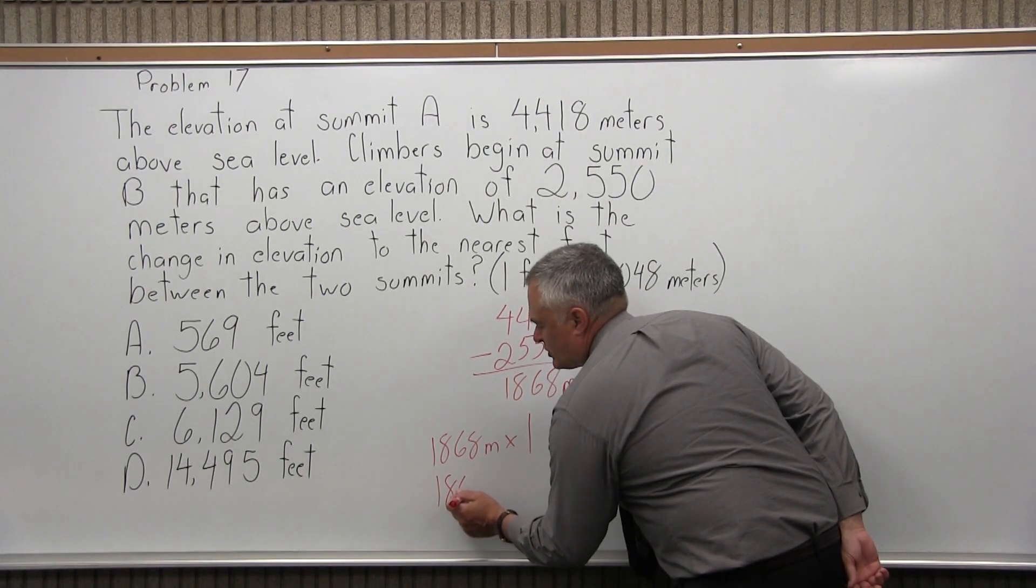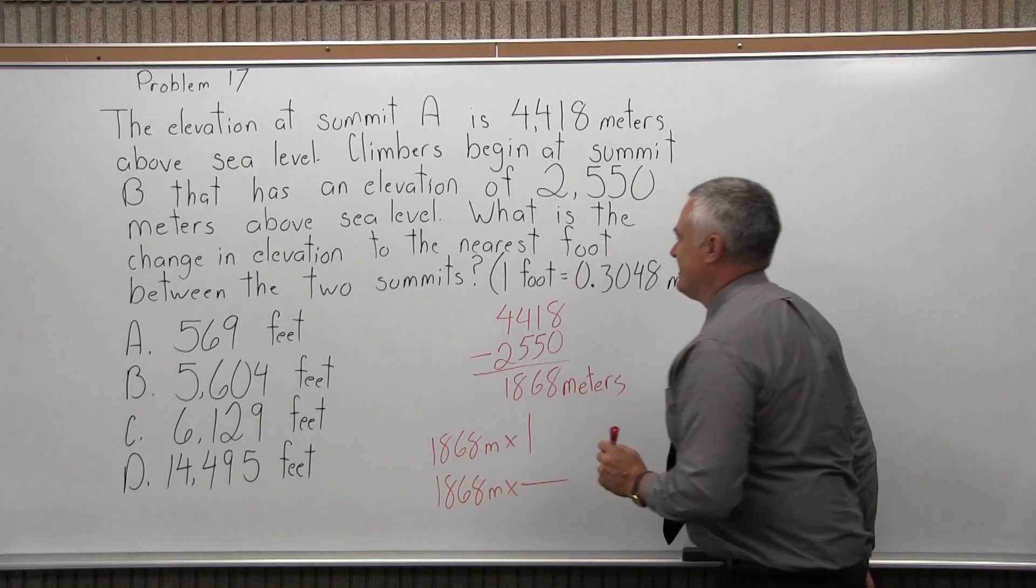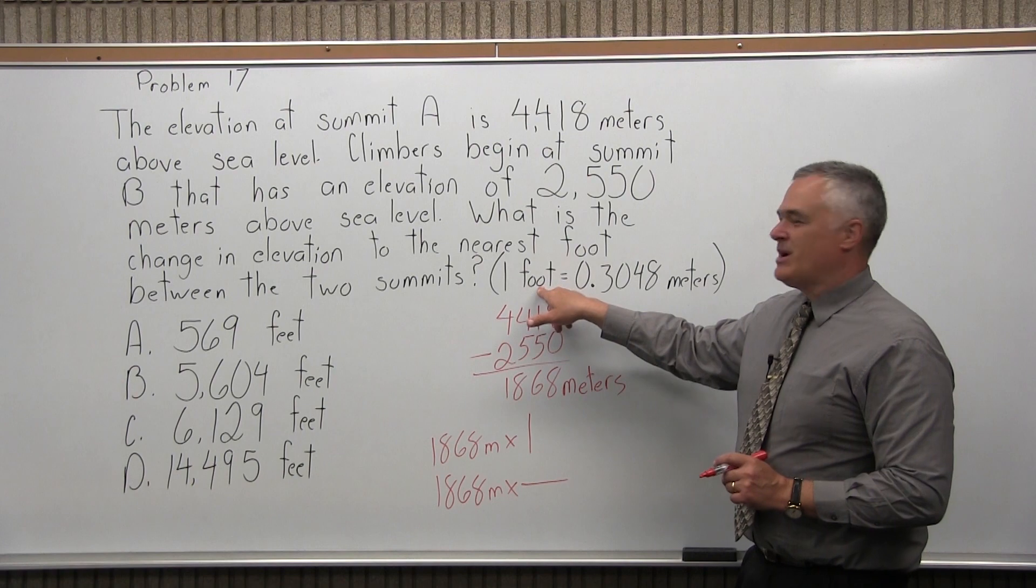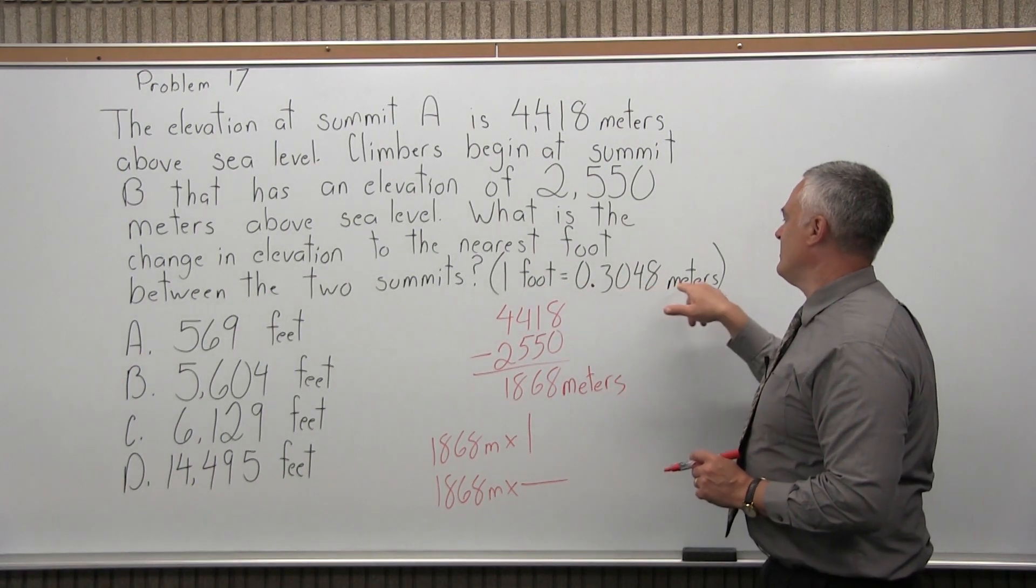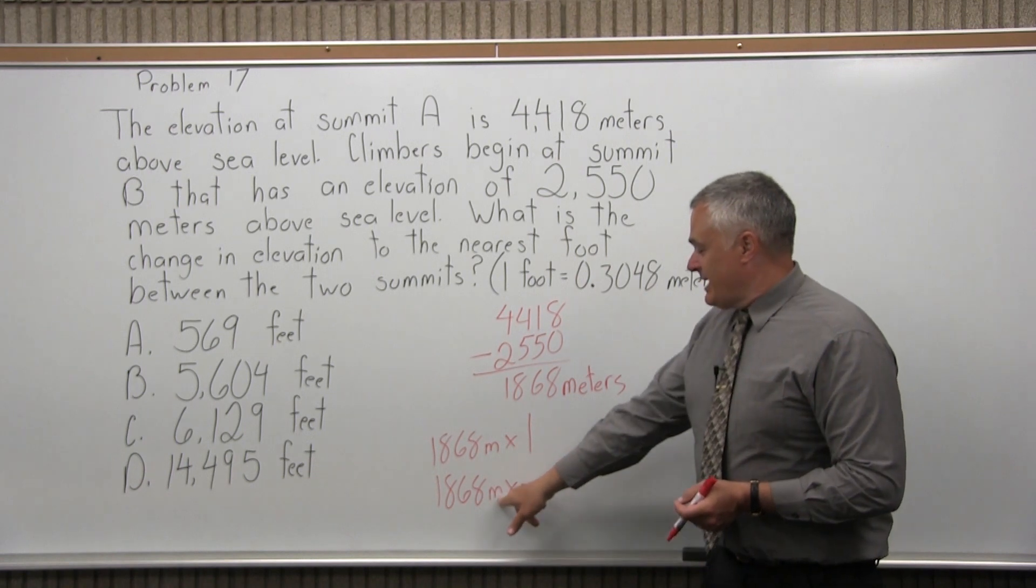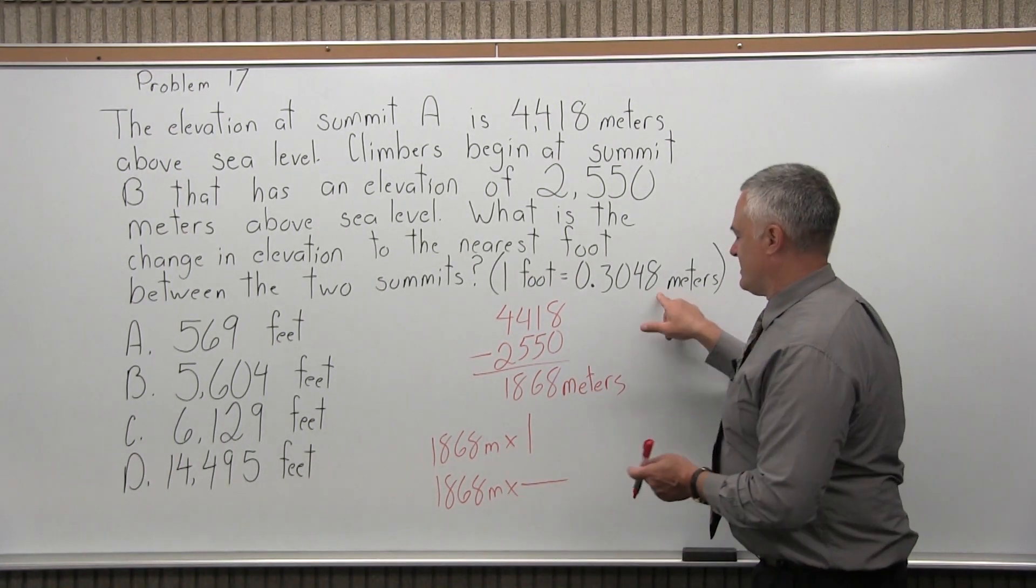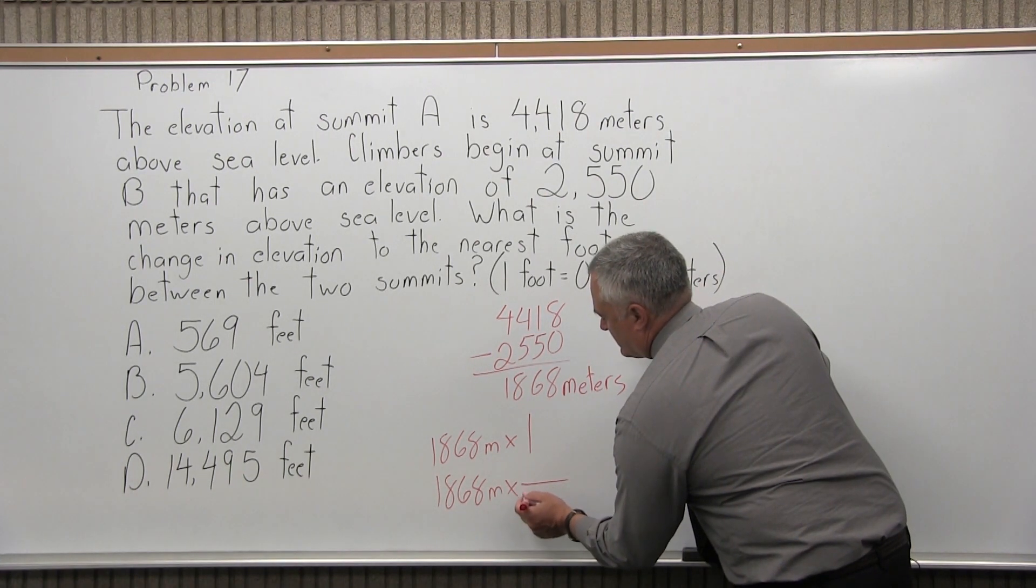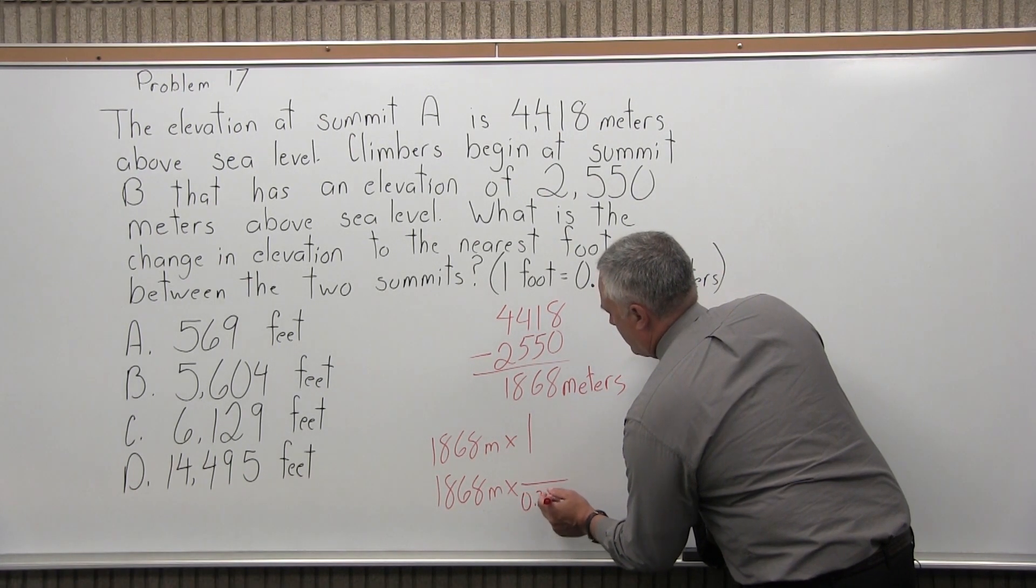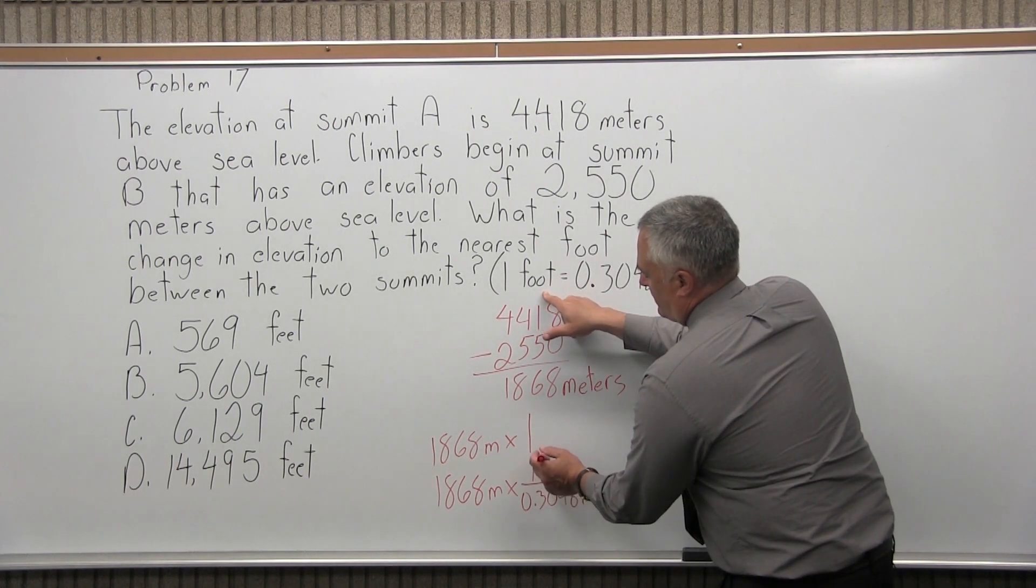But the question is, which one do you put on top? Do you put the one foot on top or do you put the 0.3048 meters on top? Well, you want the meters to cancel. My answer is in meters, so I want meters to be in the denominator so it'll cancel. So I'm going to have 0.3048 m for meters and the equivalent amount is one foot.